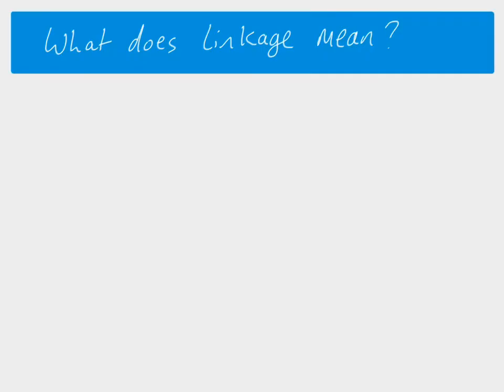This video looks at autosomal linkage. Linkage means that the genes we're interested in are found on the same chromosome. The autosomal part means we're talking about body cells and not sex cells, so this is not sex linkage.